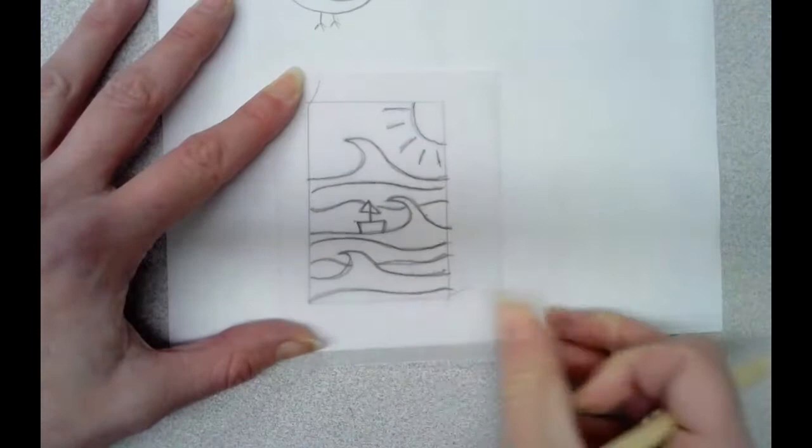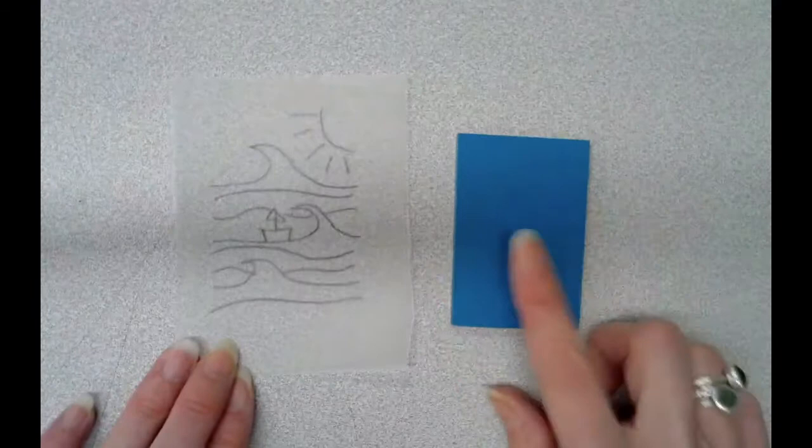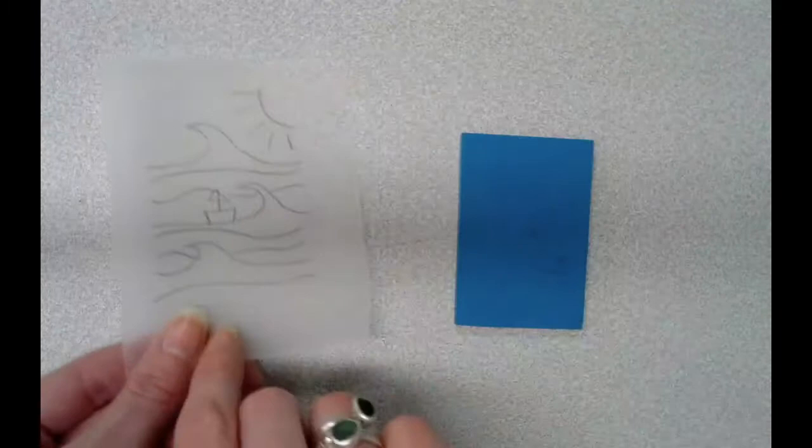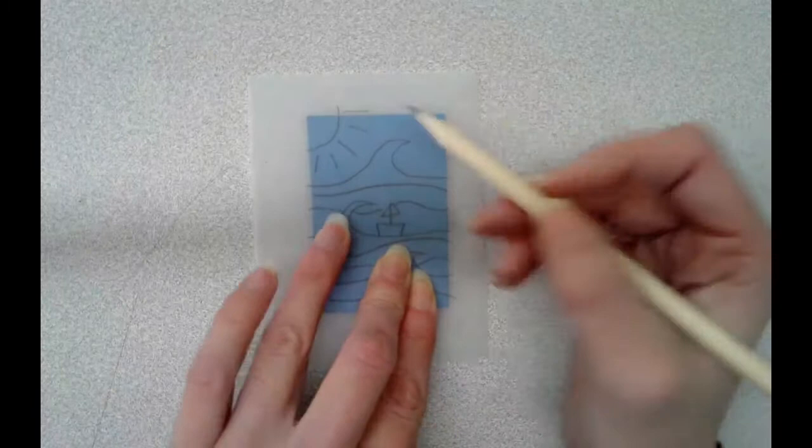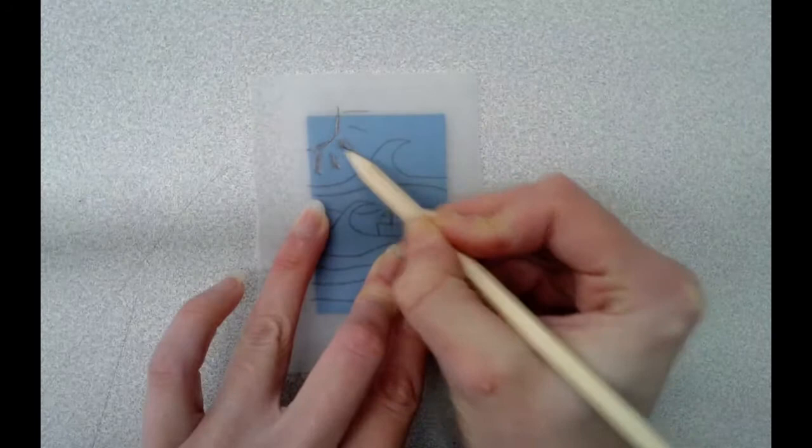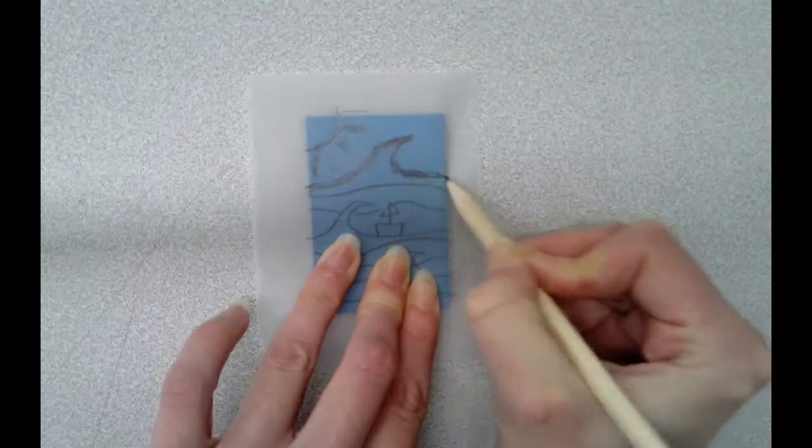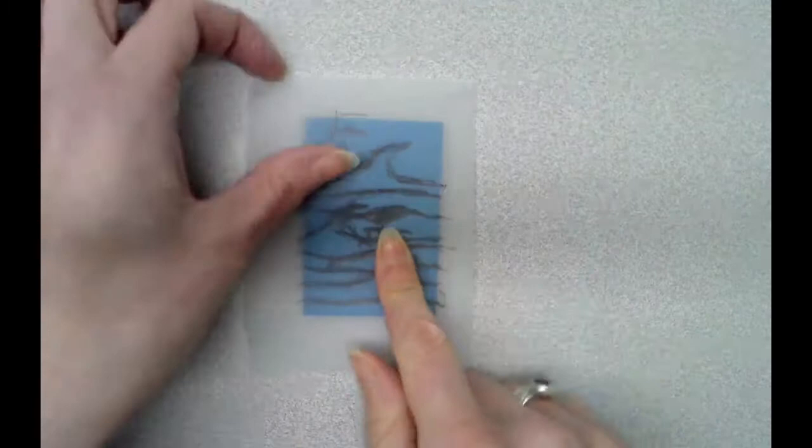And ta-da! Okay, so now we've got our design on our tracing paper, now we're going to want to get it onto our tile. Now for doing this, we need to flip it over, so not like that, we're going to flip it over, so it's face down onto our tile. And then we're going to press really hard, so we're just going to kind of really roughly kind of scribble over those lines to transfer our design.